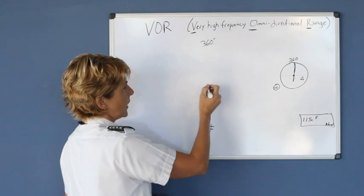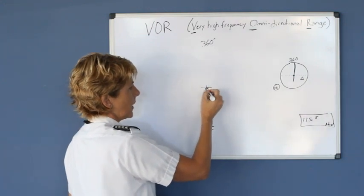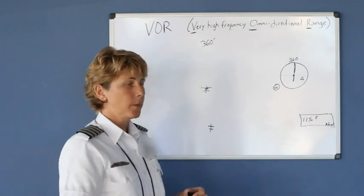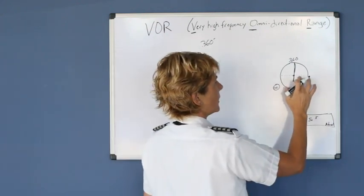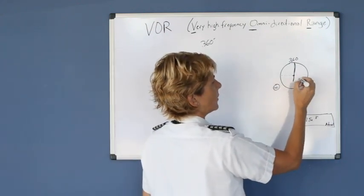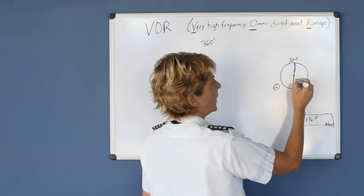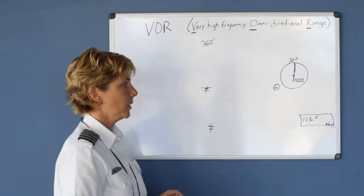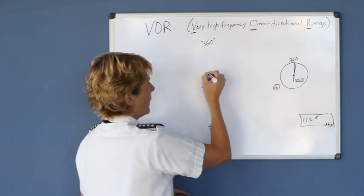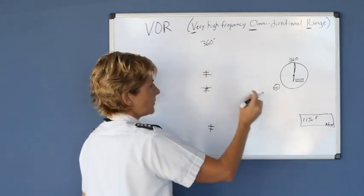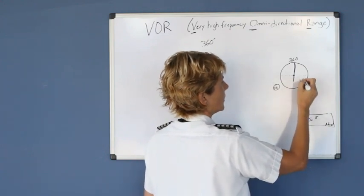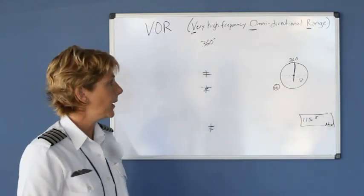As you continue to fly to the station, and you end up right on top of the station, the thing doesn't know if you were to or from it. So it goes into the zone of confusion, or the area of ambiguity, and it'll simply flag out. It can't decide if you're to or from, so it shows neither. Once you pass by the station, now you're on the from side, because you're traveling away from the station. So you would get a from flag like that.